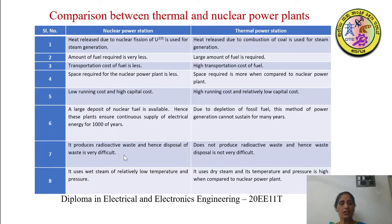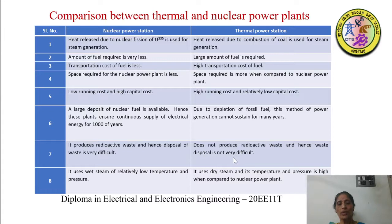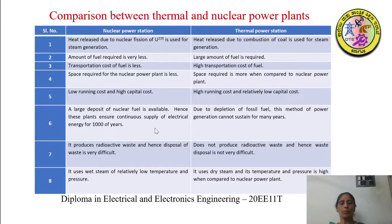Seventh: nuclear power plants produce radioactive waste, and hence disposal of the waste is very difficult. Thermal power plants do not produce radioactive waste, so waste disposal is not very difficult. Eighth: nuclear power plants use wet steam of relatively low temperature and pressure, whereas thermal power plants use dry steam at higher temperature and pressure compared to the nuclear power plant. These are the main comparisons between a nuclear power station and a thermal power station.